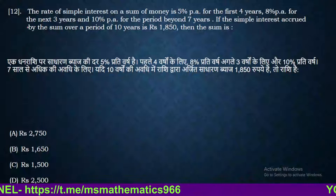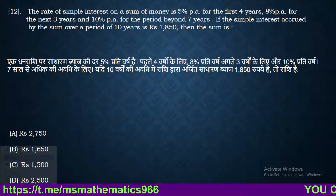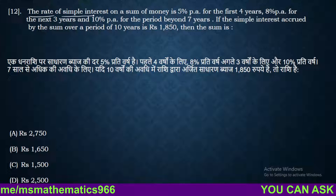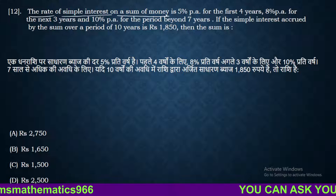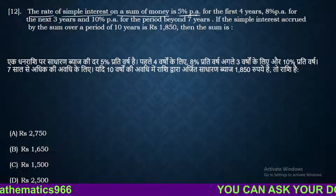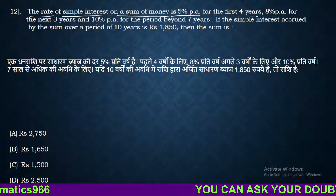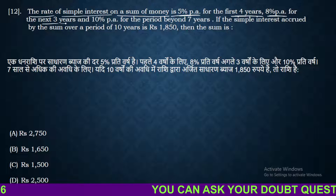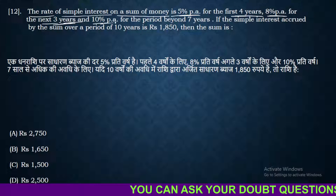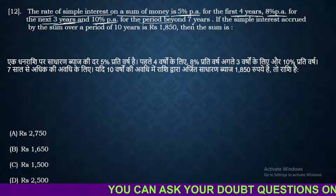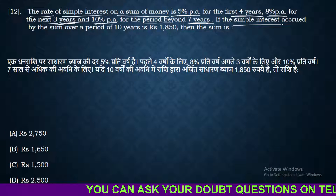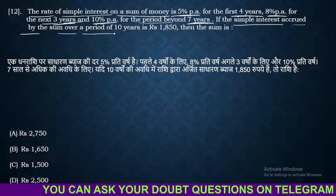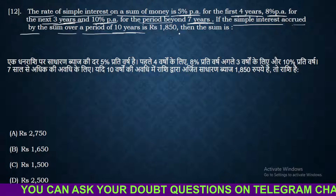The question says that the rate of simple interest on a sum of money is 5% per annum for the first 4 years, and 8% per annum for the next 3 years, and 10% per annum for the period beyond 7 years. If the simple interest accrued by the sum over a period of 10 years is Rs.